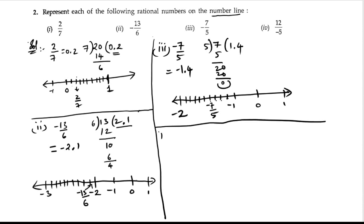Next, fourth bit: 12 by minus 5. Let us divide 12 by 5. 5 ones are 5, 5 twos are 10. So 2 left. 0.05, 4s are 20. So it is negative 2.4.